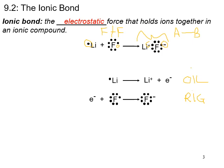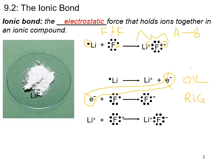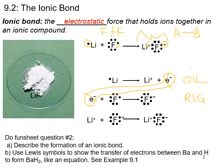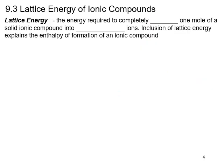Lithium's electron configuration was 1s² 2s¹, and fluorine's was 1s² 2s² 2p⁵. Once they form the compound, lithium achieves the noble gas structure of helium and fluorine becomes fluoride with the noble gas structure of neon. These half-reactions represent oxidation and reduction. If you add the two half-reactions together, the electrons cancel out and you get the overall reaction. Now try fun sheet question number two, which asks you to describe the formation of an ionic bond in your own words and use Lewis symbols to show electron transfer between barium and hydrogen to form barium hydride.